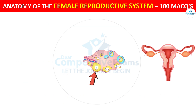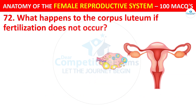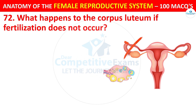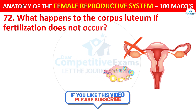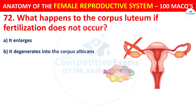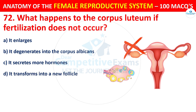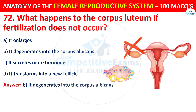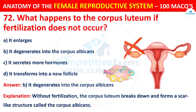Question number 72. What happens to the corpus luteum if fertilization does not occur? The correct answer is B — it degenerates into the corpus albicans. Without fertilization, the corpus luteum breaks down and forms a scar-like structure called the corpus albicans.